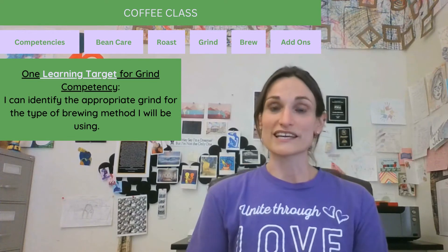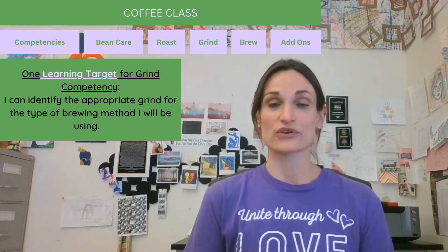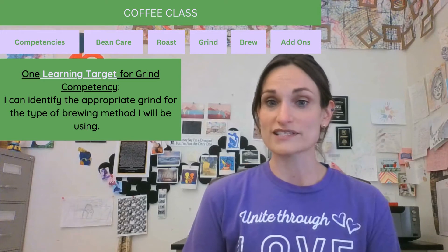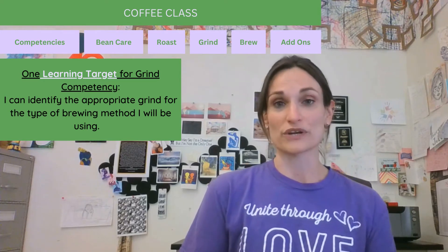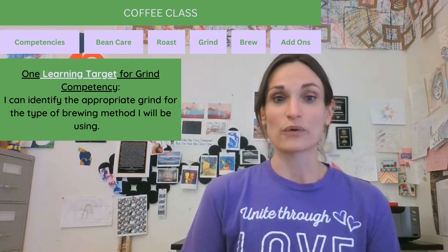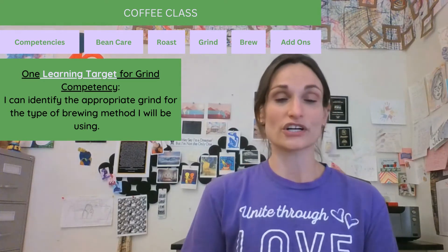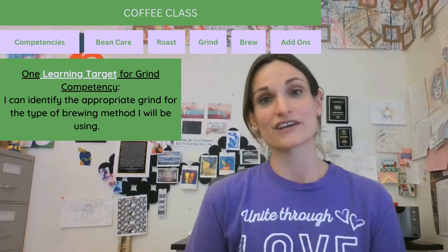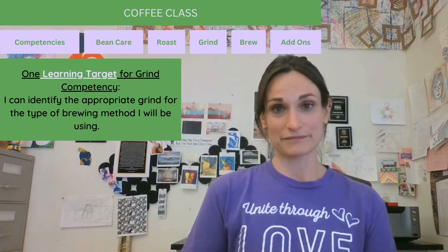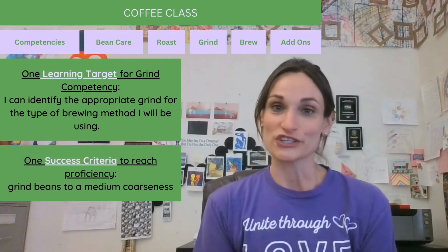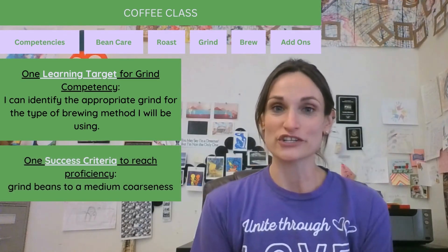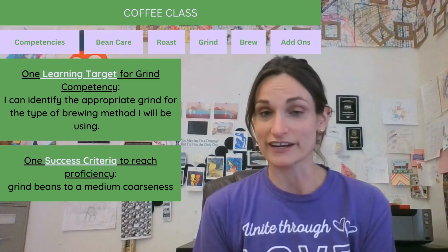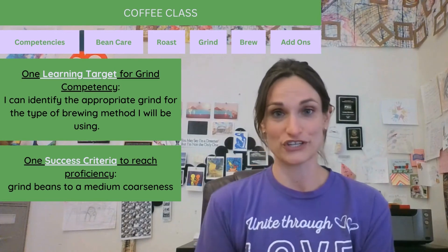Within each of those learning targets, you would have success criteria. Maybe for assessment one, we were brewing using a pour over, and we would want to make sure that the grind is a medium grind, which would be appropriate for that method. Ensuring that you grind your coffee to a medium coarseness would be the success criteria within that learning target.